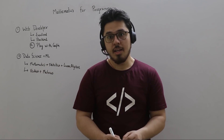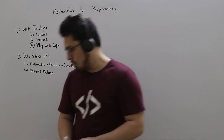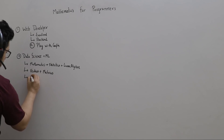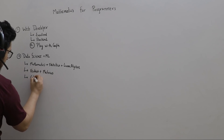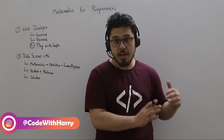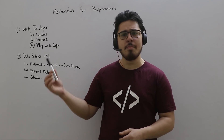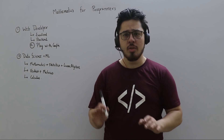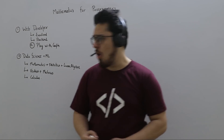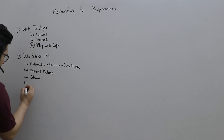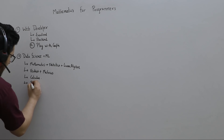For machine learning, calculus is very important. If you want to use gradient descent, minima, and maxima — you need calculus. I will include calculus and also probability as essential topics for data science and machine learning.